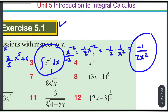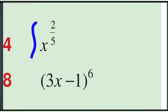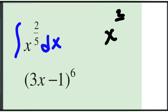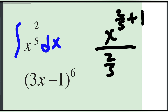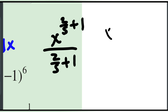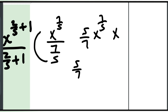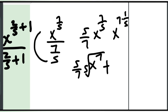Now integrate x^(2/5). Using the power rule with n = 2/5: n+1 = 2/5+1 = 7/5. So we get x^(7/5) over (7/5), which equals 5/7 times x^(7/5). This can be written as 5/7 times x^7 to the power of 1/5, or equivalently 5/7 times the 5th root of x^7, plus C.